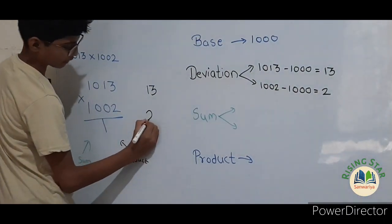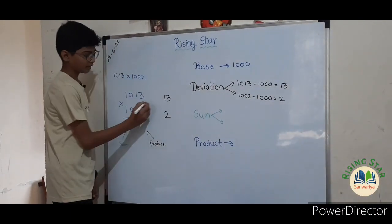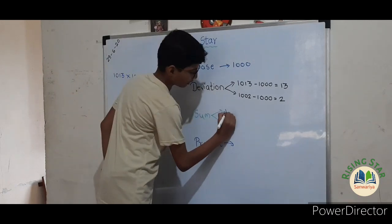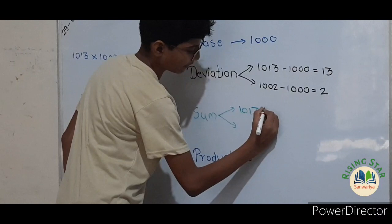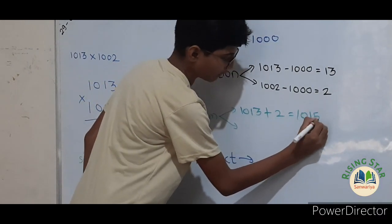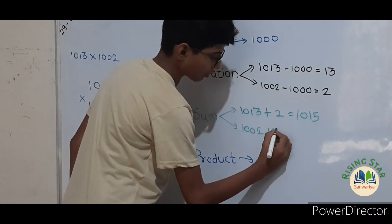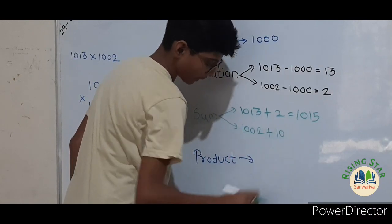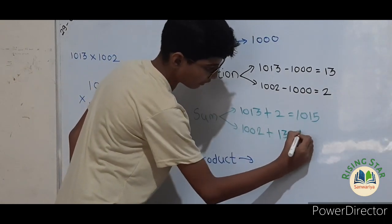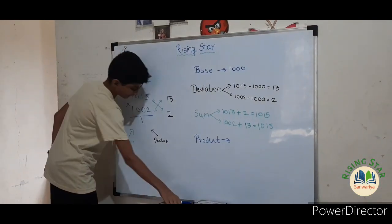So the deviations are thirteen and two. Now find the sum — you can add either pair, the answer will be the same. One thousand and thirteen plus two equals one thousand and fifteen, or one thousand and two plus thirteen also equals one thousand and fifteen. So just write one thousand and fifteen here.